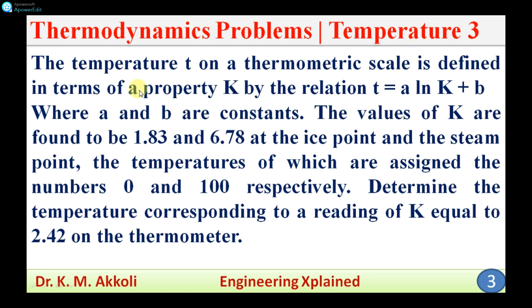The problem is that the temperature T on a thermometric scale is defined in terms of a thermometric property K by the relation T = A·ln(K) + B, where A and B are constants. The values of K are found to be 1.83 and 6.78 at ice point and steam point, the temperatures of which are assigned the numbers 0 and 100 respectively.